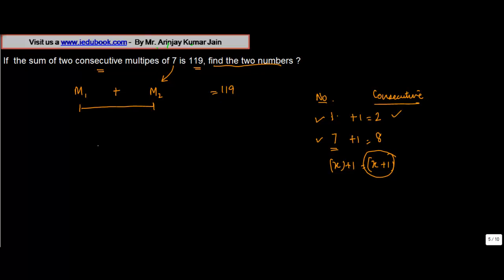What we are told is that if you multiply both these numbers by seven, because these are multiples of seven, then the sum that you get is 119. So let's call the first number as 7x plus 7(x+1).